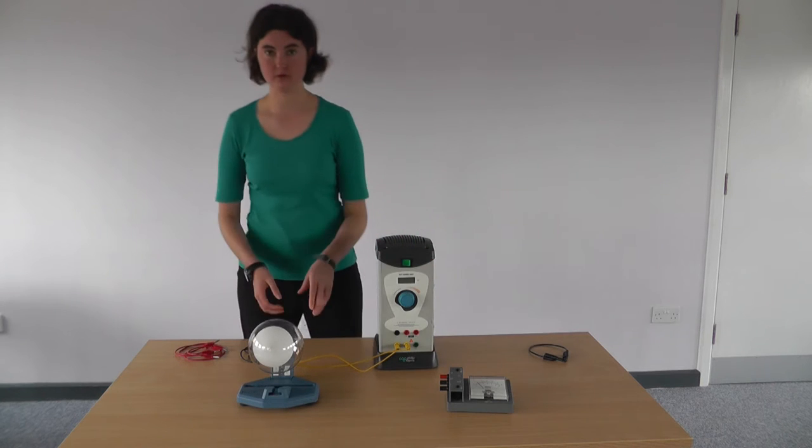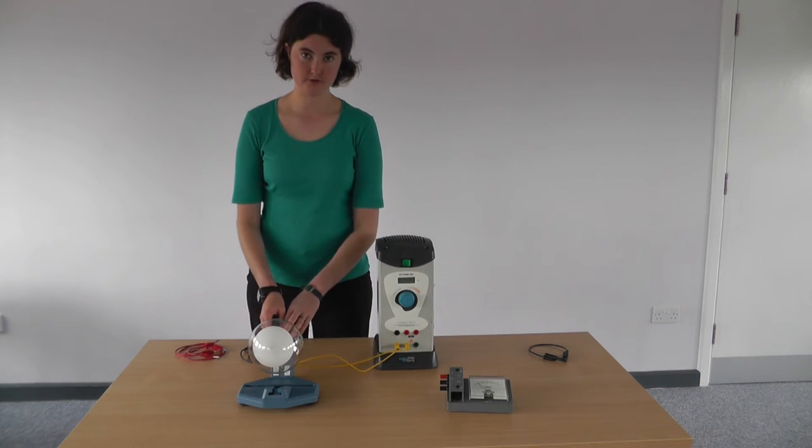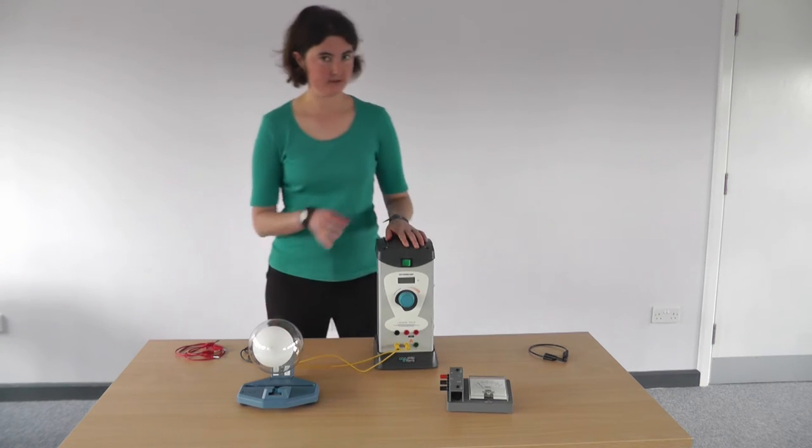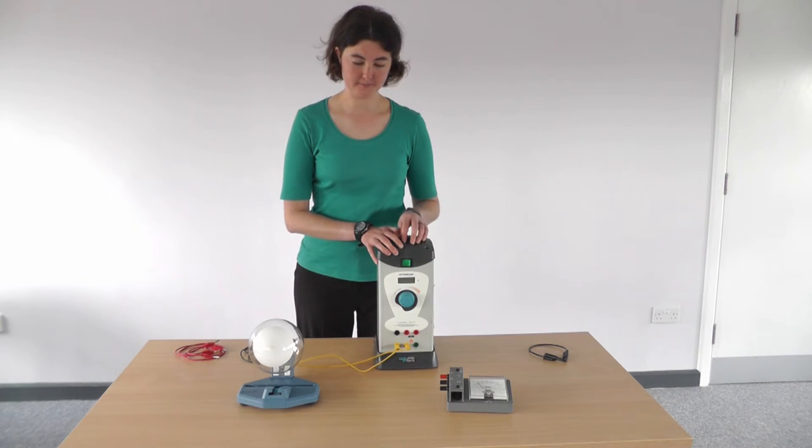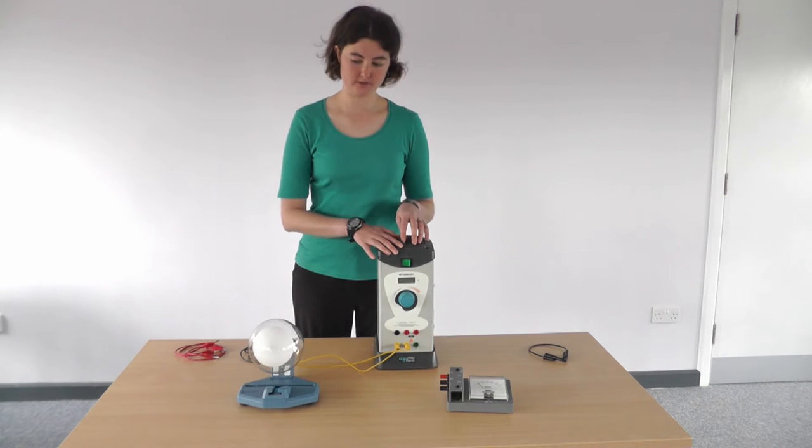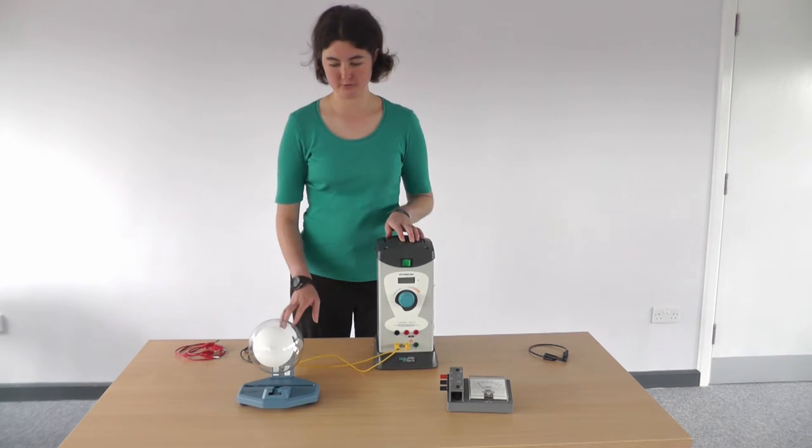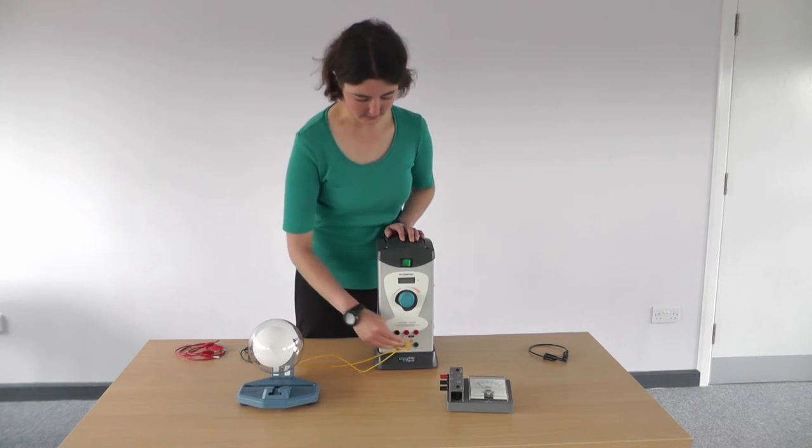When you heat a metal, you can boil off electrons. This is an EHT, extra high tension voltage supply. One of its principal uses is with electron tubes. It has a built-in supply for the heating elements.